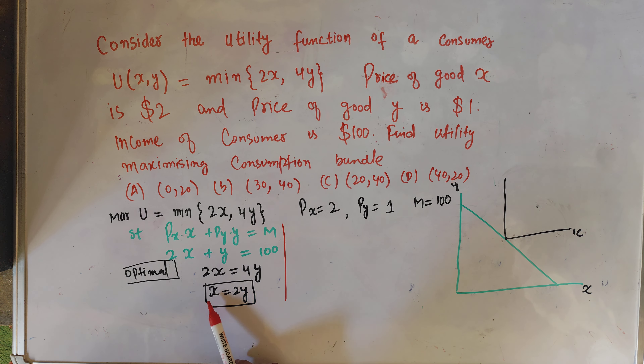This kind of utility function has an indifference curve that is right-angled — it has a kink, so it is not differentiable at that point. That is why we cannot use the tangency condition. The condition for optimality requires that we equate the terms in the parenthesis with each other, giving us x = 2y.